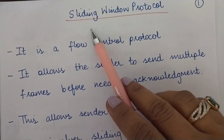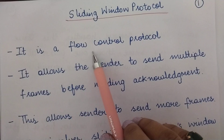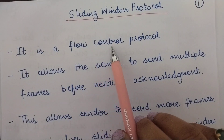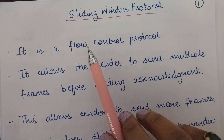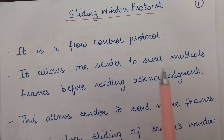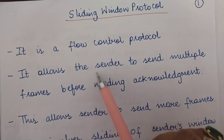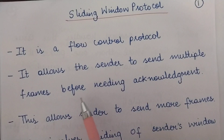Today we are going to study the sliding window protocol. The sliding window protocol is a flow control protocol — it aims at controlling the flow of data. It allows the sender to send multiple frames before needing an acknowledgement. Unlike the stop-and-wait protocol where one frame is sent and the sender waits for acknowledgement before sending the next, here the sender can send multiple frames one by one and then receive acknowledgements all together.